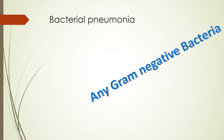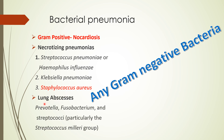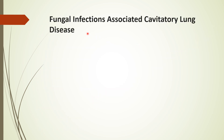What are the bacterial pneumonias causing cavity? Any gram-negative bacteria can cause a cavity. For gram-positives, it's nocardiosis. Causes of necrotizing pneumonia include Streptococcus pneumoniae, Haemophilus influenzae, Klebsiella pneumoniae, and Staphylococcus aureus. For lung abscesses, the causative organisms are anaerobes such as Prevotella, Fusobacterium, and the Streptococcus milleri group.